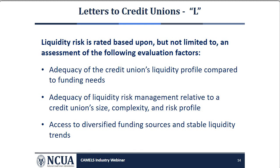The definition of the updated L component is in the letter to credit unions. When evaluating the adequacy of a credit union's liquidity profile, examiners will consider the current and prospective sources of liquidity compared to funding needs and the adequacy of liquidity risk management relative to the credit union's size, complexity, and risk profile. The credit union should have access to diversified sources of funding and limited reliance on funding sources that may not be available in times of financial stress or adverse changes in market conditions.